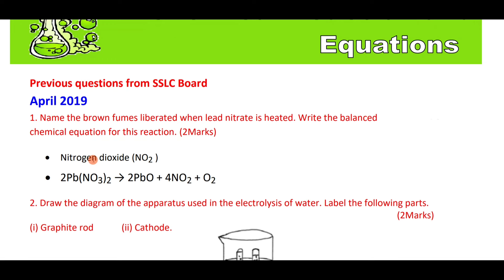The first question: name the brown fumes liberated when lead nitrate is heated. When lead nitrate is heated, we get brown fumes called nitrogen dioxide. The chemical reaction is: lead nitrate, that is 2Pb(NO₃)₂, on heating gives 2PbO (lead oxide) plus nitrogen dioxide. This is an example for decomposition reaction.